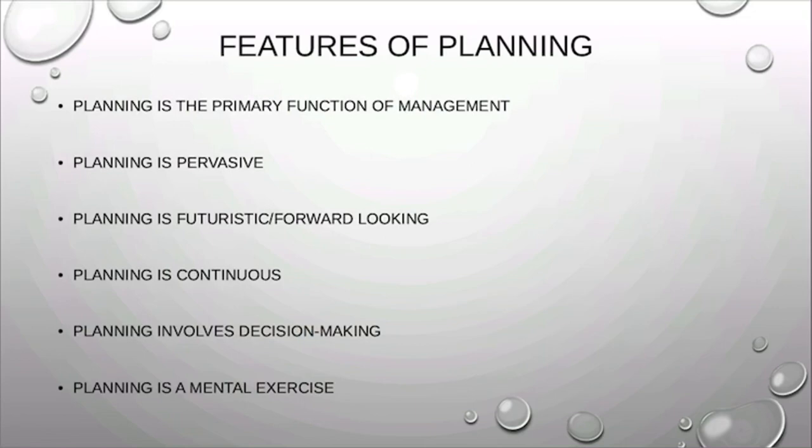The next feature is planning involves decision making. In planning, we think of various alternatives. If there is only one solution to a problem, then there is no need for planning at all. But if there are four solutions to a problem, then the manager needs to evaluate all the alternatives — what solutions are available, which has the least cost — weighing the pros, cons, benefits, and losses. Then the manager chooses the best alternative from among them.